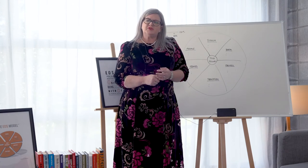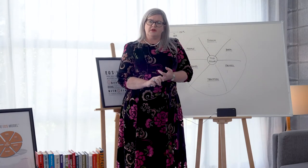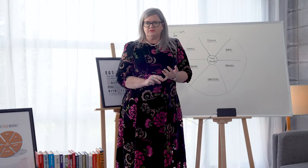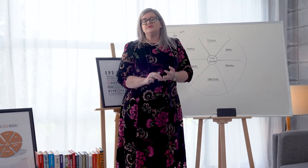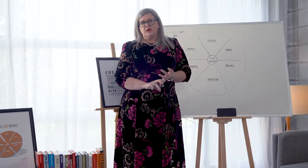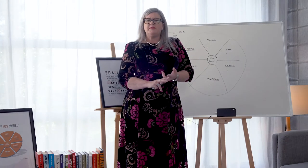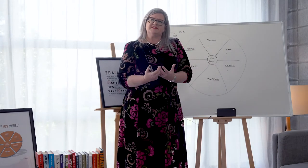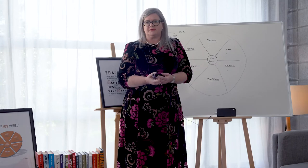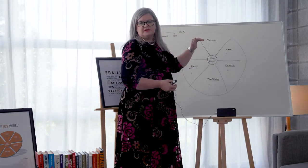In EOS, we talk about three key things in terms of helping an organization. We talk about vision, which is getting everybody 100% on the same page. We talk about traction, which is about having accountability for achieving that vision. And we talk about healthy, which is getting a healthy, cohesive, functioning leadership team. And the first thing on our model is actually the vision component.